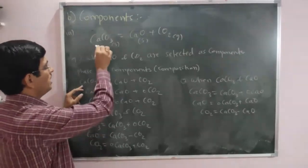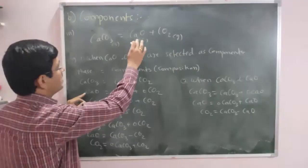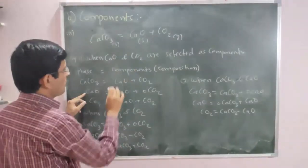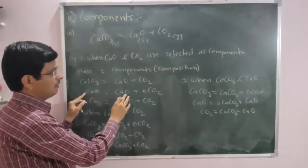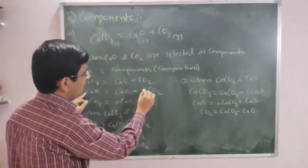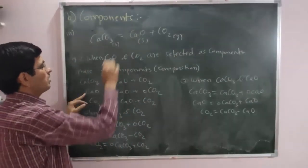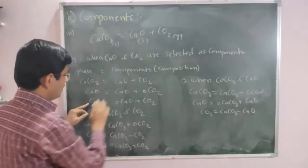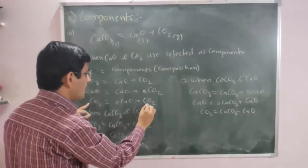The second phase is CaO. CaO is directly one of the selected components, so it is expressed directly with CaCO3 = 0 (zero quantity). The third phase is CO2, which is also a direct component.